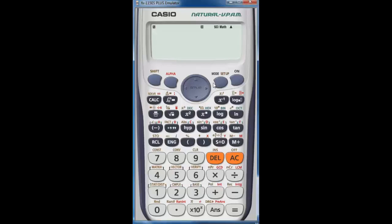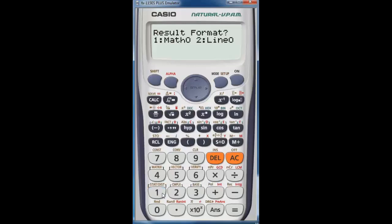If you go to shift mode setup one one, and you go say 0.0055 for example, when you hit equals it gives you a fraction. Then you hit S to D and it gives it to you in scientific, then you can get engineering.